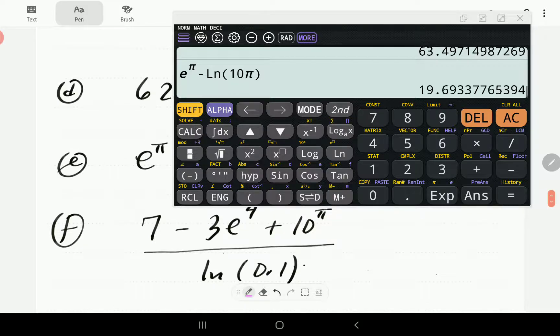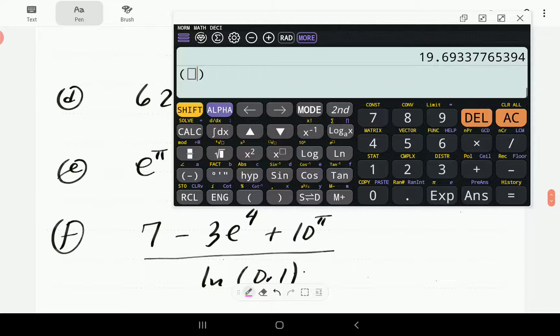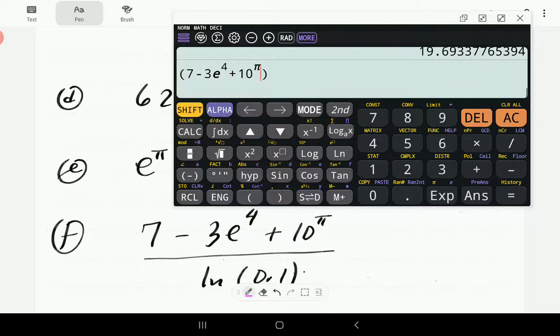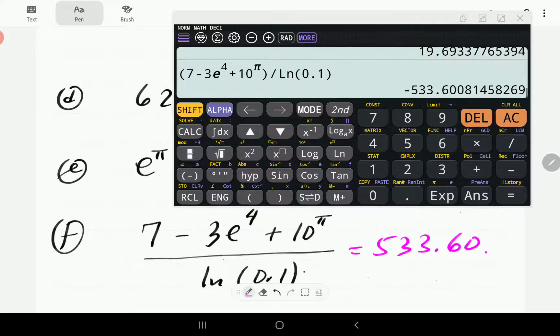For the last one, we have got 7 minus 3e to the power of 4, plus 10 to the power of pi, and this whole thing is divided by ln 0.1. This gives us negative 533.60.